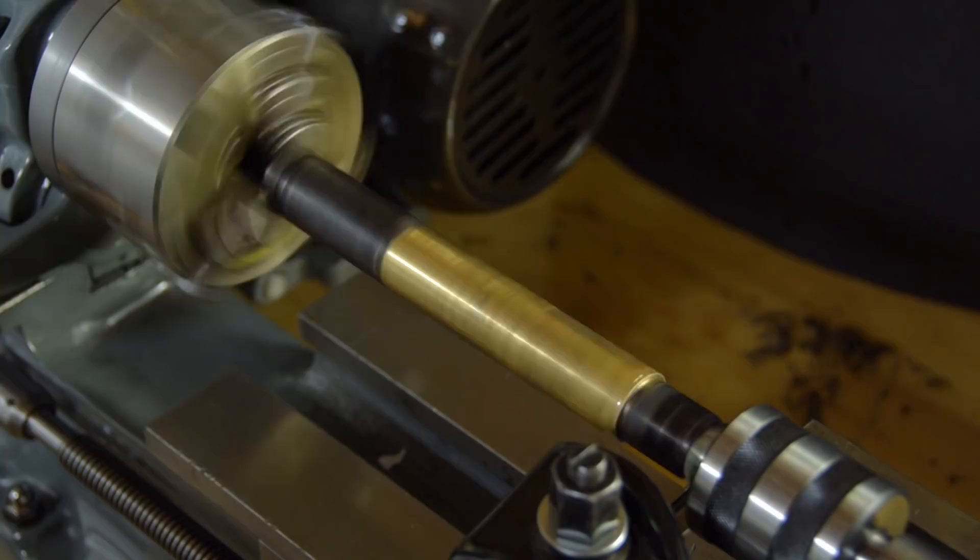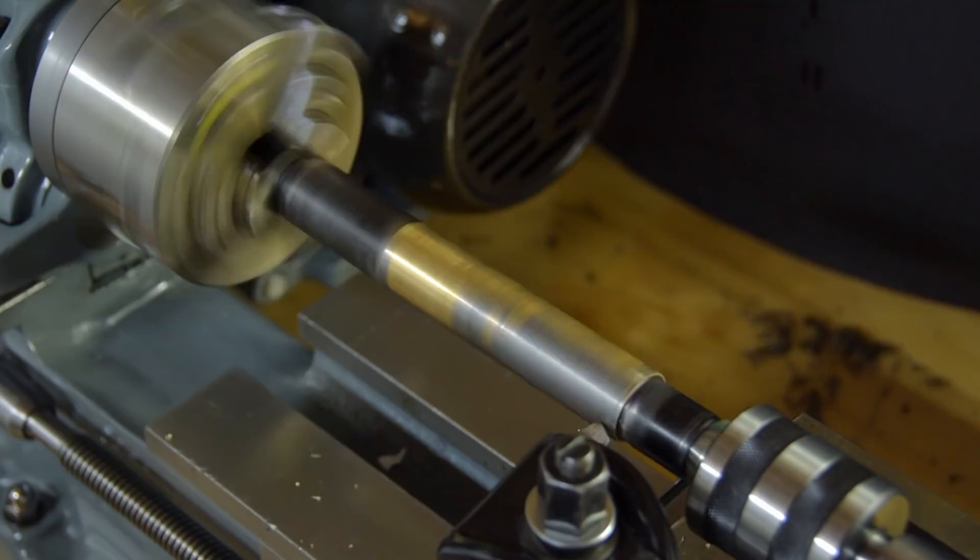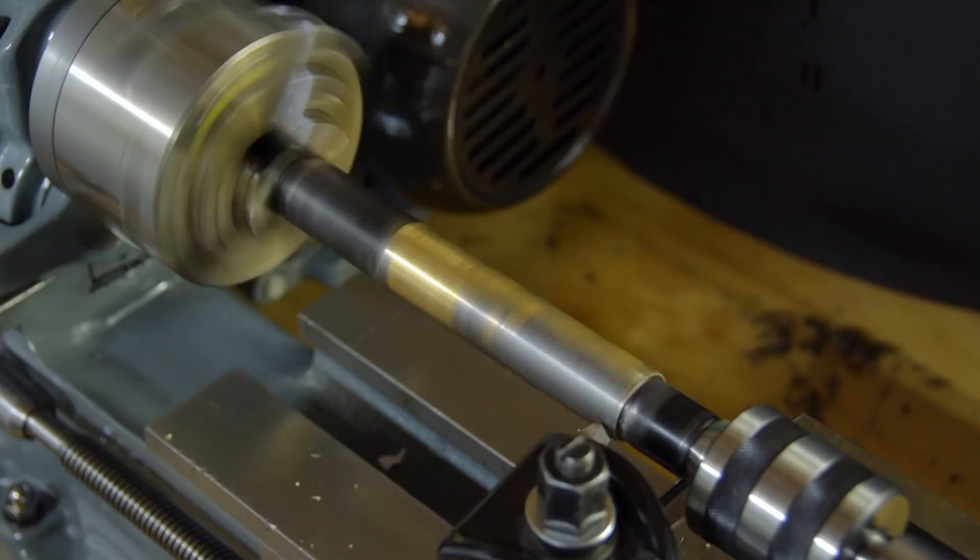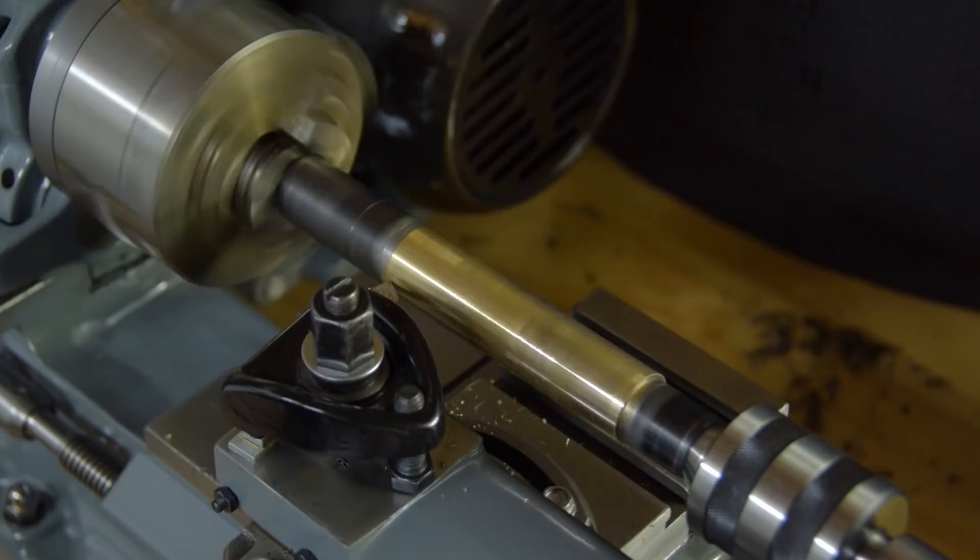The game plan is to turn the repaired section down to good metal. Then we will slide bronze sleeves over the top and then turn the bronze down to the correct diameter. Hopefully the damage isn't so bad that the sleeve breaks apart.